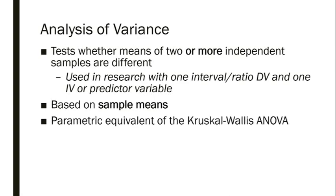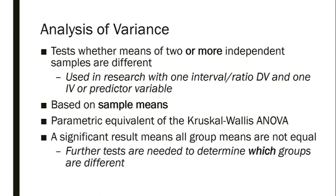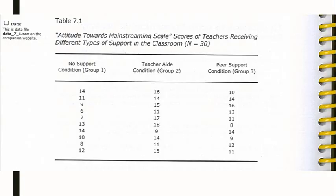This analysis of variance is the parametric equivalent of the Kruskal-Wallis analysis of variance that we covered back in topic four. When we get a significant result — that is when the F-ratio leads us to conclude that the null hypothesis should be rejected — what that means is that all group means are not equal. It doesn't tell us anything about which groups are different. So in that circumstance, when we get a statistically significant F-ratio, we need to do some additional tests. Here's Table 7.1, which is on page 76 of the pink book.